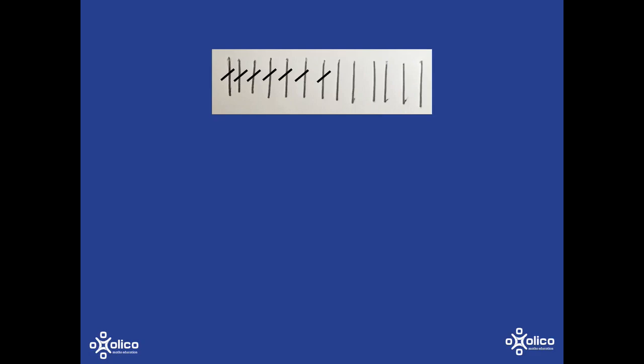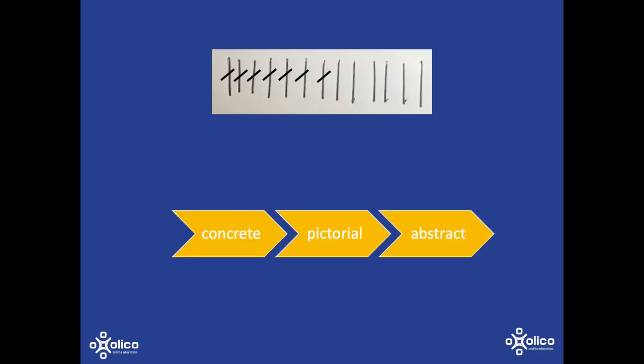What we want them to do is move away from this inefficient practice of having to count everything in ones or cross out everything in ones. We're going to do it by going through a process similar to what we did for addition. We'll work from the very concrete where they're working with actual physical materials and manipulating them, to a more pictorial or imagined version, and then finally to the fully abstract version.